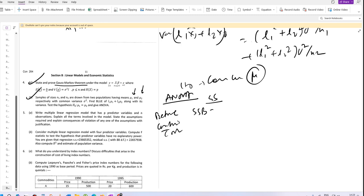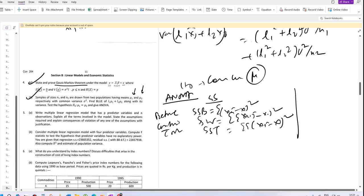SSB is summation of NI times xi bar minus x bar squared. SSW is summation double summation of xi j minus xi bar squared. SST is summation of xi j minus x bar squared.